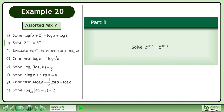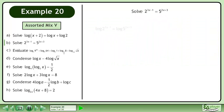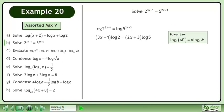In Part B, solve 2^(3x-1) = 5^(2x+3). Take the logarithm of each side. Expand using the power law.